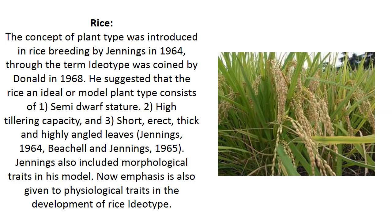Regarding idiotypes of selected crops: idiotype breeding was first described in rice. Although idiotype was defined in 1968 by Donald, Jennings gave the idiotype of rice in 1964. He suggested that the rice ideal plant type should have semi-dwarf stature, high tillering capacity, short erect thick and highly-angled leaves. Now emphasis is also given to physiological traits in the development of rice idiotype.